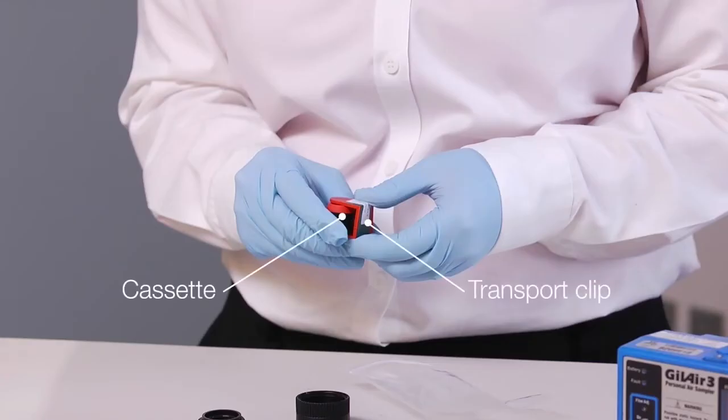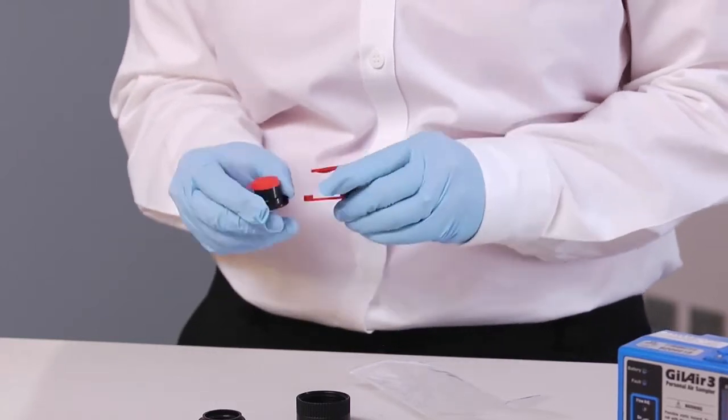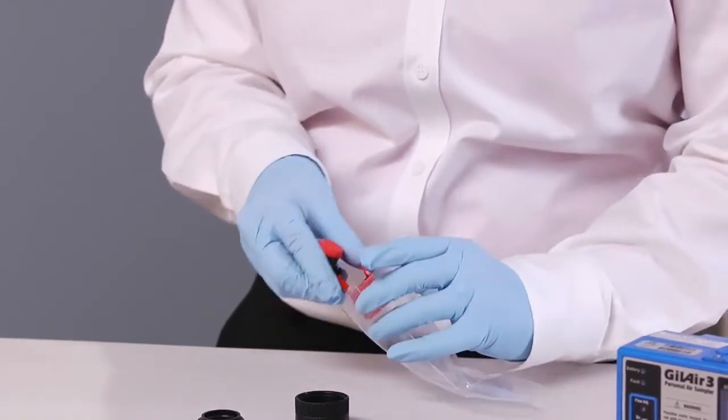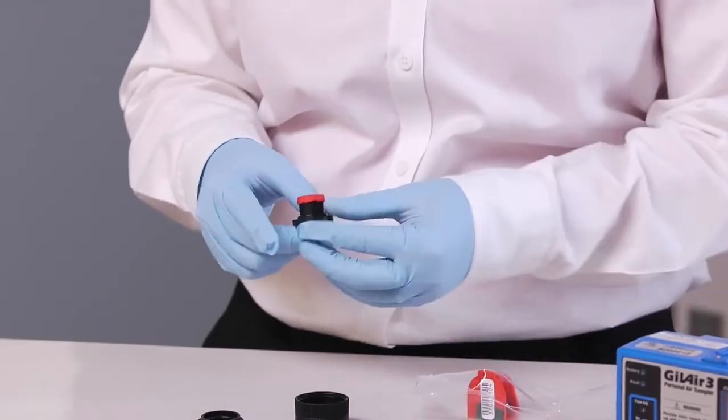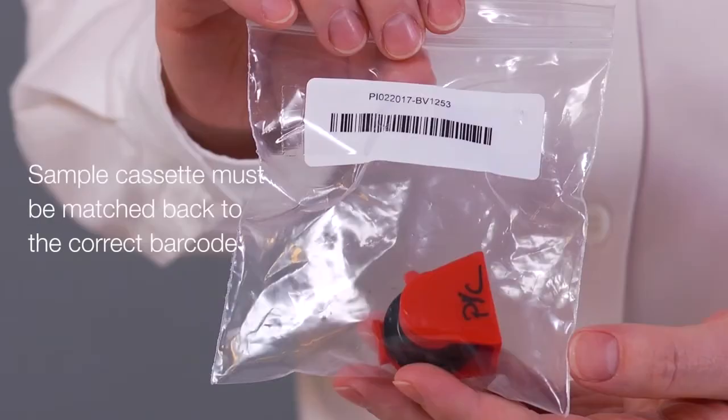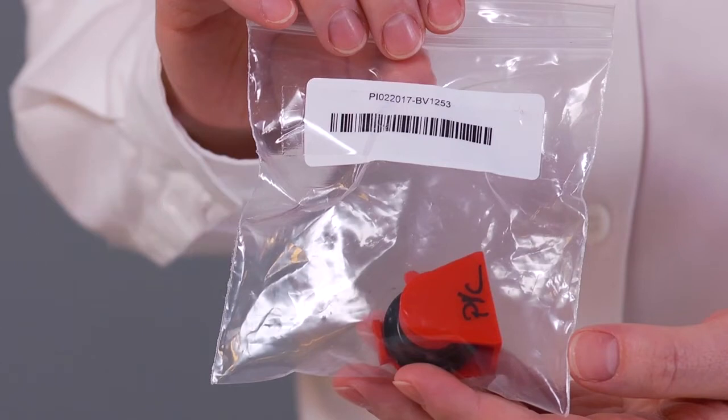Remove the cassette from its transport clip and put the clip back into the same bag for later. It is essential after sampling that if the transport clip or baggie has a barcode, the sample cassette must be matched back to the correct barcode.